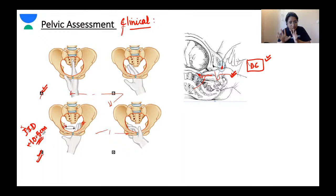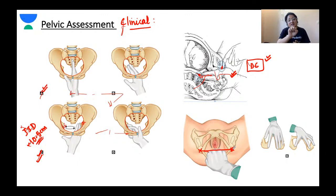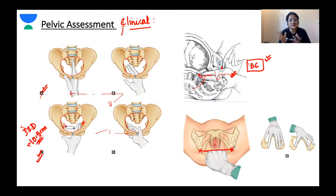Next, we palpate one ischial spine then the other. The inter-ischial spinous diameter (IID) should normally be more than 10.5 cm. We get a clinical judgment of whether the IID seems adequate and whether the side walls are convergent. We then check the iliopubic eminence at the front of the pelvis. Coming out after the PV examination, we measure the diameters of the outlet, focusing on the anatomical outlet.